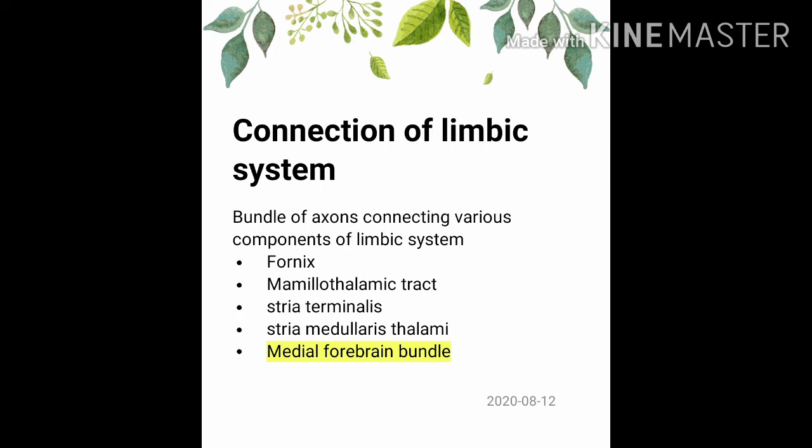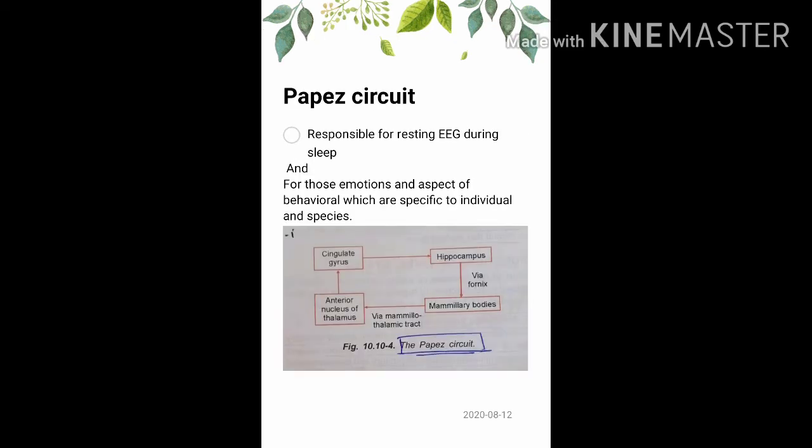The connections of the limbic system are formed by bundles of axons connecting its various components. These include the fornix, the mammillothalamic tract, the stria terminalis, the stria medullaris thalami, and the medial forebrain bundle. Among these, the medial forebrain bundle is very important — it is the major bundle of axons that connects the limbic system with other parts of the brain.